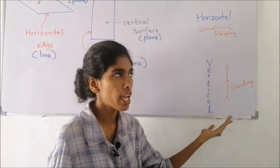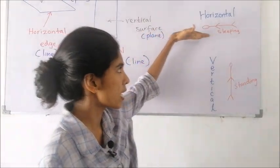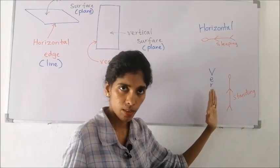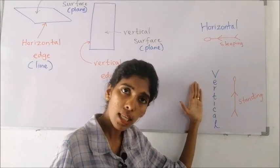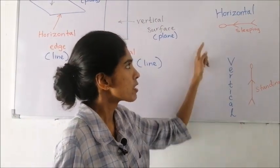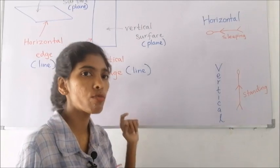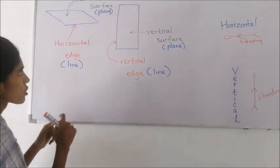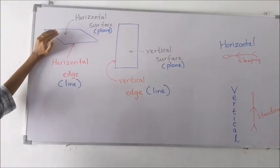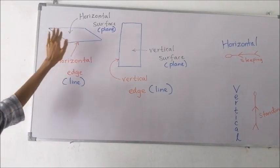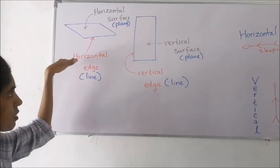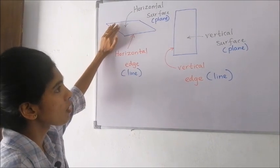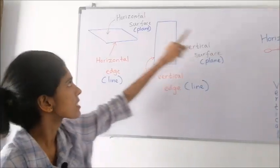Horizontal surfaces and horizontal edges are like sleeping ones. Vertical means like standing. There are vertical surfaces and vertical edges also. These two are the concepts we use to describe the location of objects. This example is like the top surface of a table — it is like sleeping, so it is a horizontal surface.